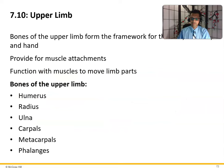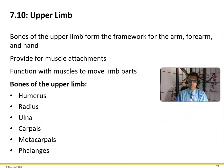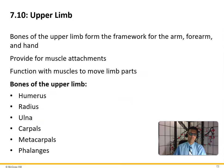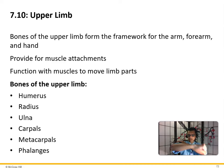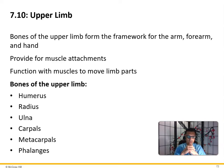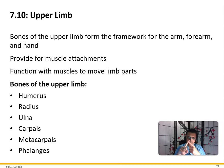The upper limb: bones of the upper limb form the framework of the arm, the forearm, and the hand, and provide for muscle attachments. We have 30 bones in the upper limb: humerus, radius, ulna, carpals, metacarpals, and phalanges.